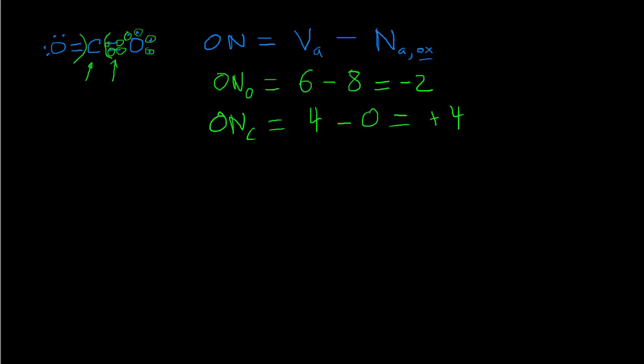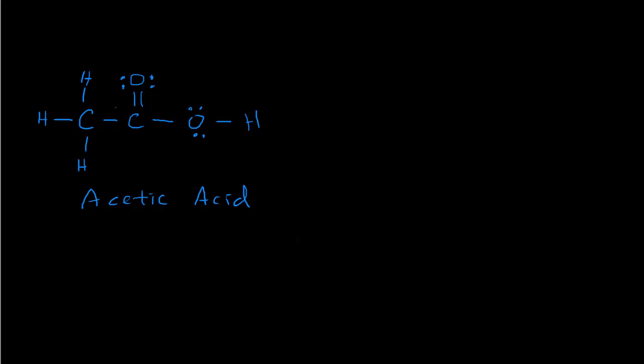Let's do another example with a slightly more complicated molecule — acetic acid, the acid in vinegar. We'll go through and figure out the oxidation numbers on all atoms. First, divide up the electrons by drawing curly lines to group electrons in each bond with the more electronegative atom. Between carbon and hydrogen, carbon is more electronegative, so those electrons go to carbon. For a carbon-to-carbon single bond, both atoms have the same electronegativity.